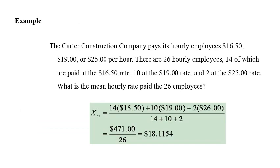Here we have an example of this. The Cutter Construction Company pays its hourly employees $16.50, $19, or $25 per hour. There are 26 hourly employees, 14 of which are paid at $16.50 rate, 10 at $19, and 2 at $25 rate. What is the mean hourly rate paid for the 26 employees? We should multiply each value from the three values by the weights, which means how many times repeated. At the end we can see that the average is $18.11.